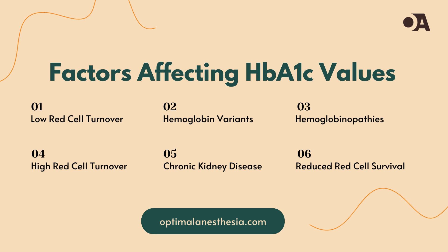Certain genetic variants of hemoglobin can affect HbA1c measurements; however, modern methods are generally robust against most common variants. The National Glycohemoglobin Standardization Program, NGSP, provides detailed information on this. Regarding chronic kidney disease, CKD: advanced CKD, especially in patients undergoing hemodialysis or receiving erythropoietin treatment, can affect HbA1c levels. Hemodialysis and altered red cell turnover can decrease measured HbA1c levels, making them less reflective of actual blood glucose levels.